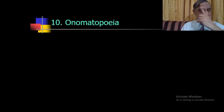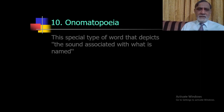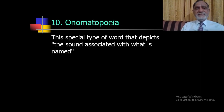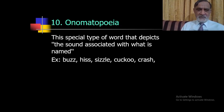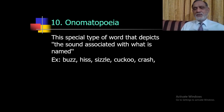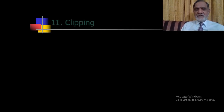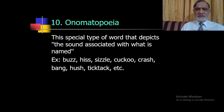The next word formation type is onomatopoeia — a special type of word that depicts the sound associated with what is named. From the actual sound, a word is formed based on how you perceive it. Examples include buzz, hiss, sizzle, cuckoo, crash, bang, hush, and tick-tock.